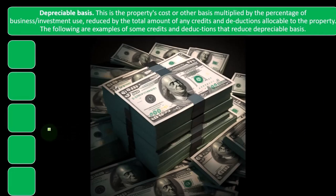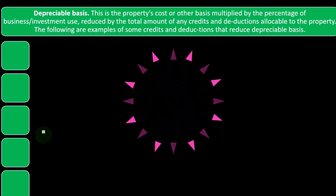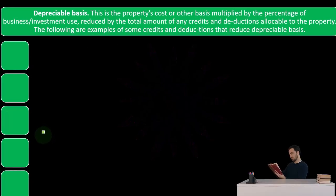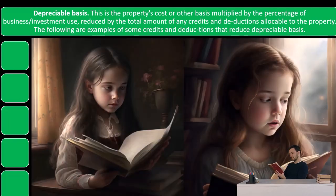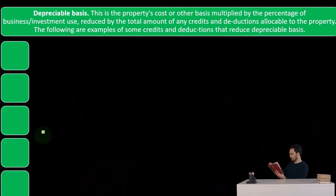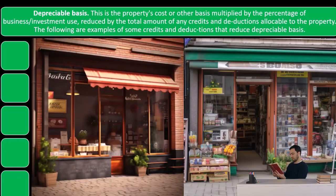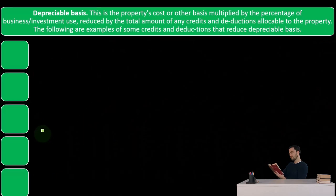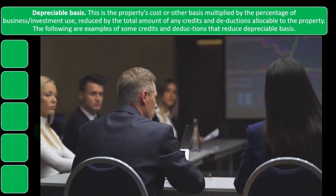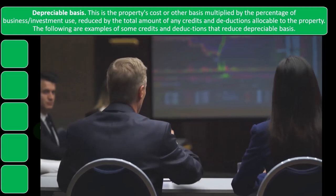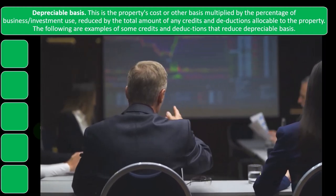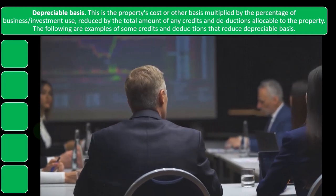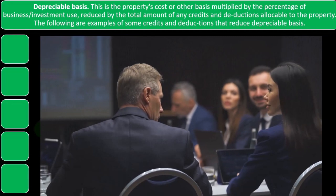Now we're talking about the depreciable basis — kind of like the adjusted cost. This is the property's cost or other basis multiplied by the percentage of business and investment use. If you had a partial personal use versus business use, you would multiply it by the percent of business use to adjust the basis. For example, if it was 80% business use, you multiply it times 80% to get the basis. The basis is then reduced by the total amount of any credits and deductions allocable to the property.